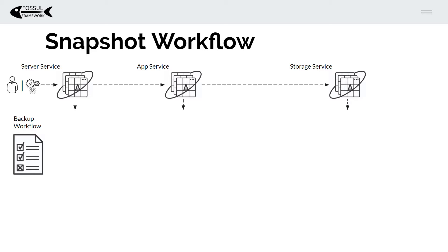First, let's look at what a snapshot workflow looks like in Fossil. For those of you that are new to Fossil, it has three services that can run in Kubernetes or OpenShift. The first is the server service, responsible for config and state. The second is the application service, responsible for application plugins. The third is a storage service, responsible for storage and archive plugins. Fossil looks at the world through the eyes of a workflow — in this case, a backup workflow.